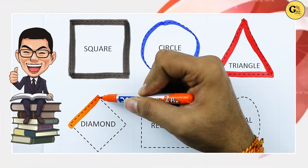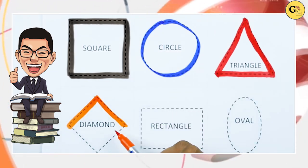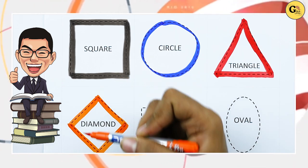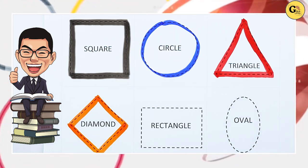One sliding line, two sliding line, three sliding line, four sliding line. It's a diamond, orange color diamond.